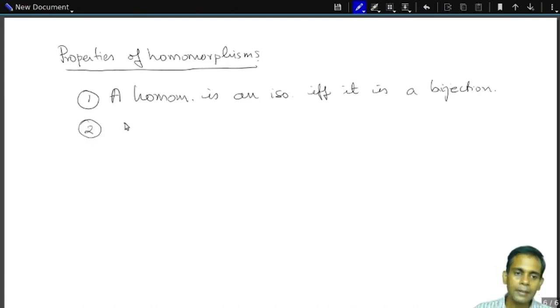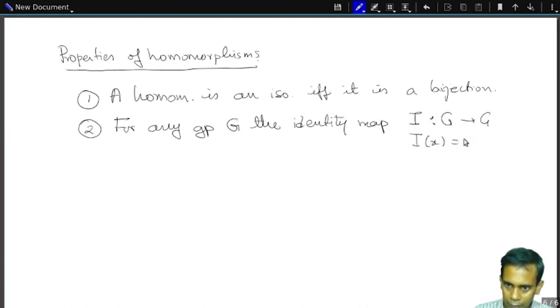Secondly, for any group G, the identity map, I from G to G, so this is the map which takes i of x to x is a group homomorphism. So I will say homomorphism or group homomorphism interchangeably. You will see later in this course that there are other kinds of homomorphisms.